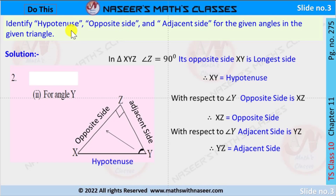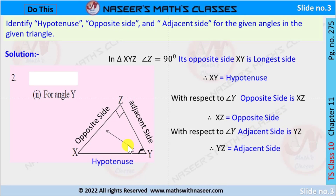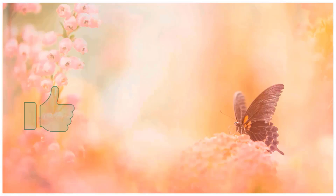Now we solve the second problem, second part: identifying the hypotenuse, opposite side, and adjacent side in triangle XYZ. Angle Z equals 90 degrees, so XY is the hypotenuse. With respect to angle Y, the opposite side is XZ, and the adjacent side is YZ.